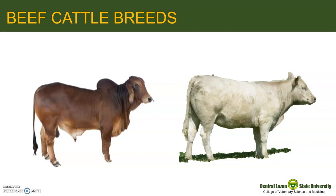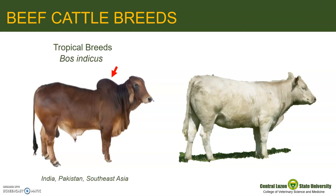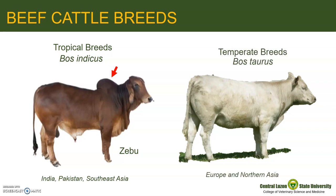There are breeds that are specialized for beef alone and others are dual or triple-purpose types. There are two types of cattle and their source or origin can be identified by the presence or absence of the hump. The hump cattle, or Bos indicus, are the tropical breeds and include cattle from India, Pakistan, and Southeast Asia. The tropical breeds are normally represented by the zebu and are characterized by a fatty hump on their shoulders, a large dewlap, and sometimes drooping ears. On the other hand, the humpless cattle, or Bos taurus, are the temperate breeds originating from Europe and Northern Asia.